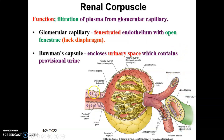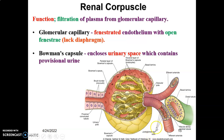The proximal convoluted tubule has simple cuboidal epithelium with microvilli — a brush border. The distal convoluted tubule is located around the afferent and efferent arterioles, also has simple cuboidal epithelium but lacks microvilli, and has modified columnar cells called macula densa cells that are in close proximity to the cells of the afferent arteriole. These cells of the afferent arteriole are modified to form the juxtaglomerular cells. The portion with blood vessels is the vascular pole, and toward the proximal convoluted tubule is the urinary pole, where the provisional urine is contained.